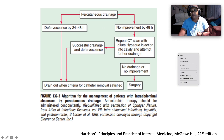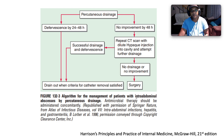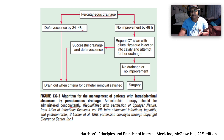This algorithm from Harrison's shows how to manage patients with intra-abdominal abscesses by percutaneous drainage. Antimicrobial therapy should be administered concomitantly. You drain the liver abscess percutaneously and should see defervescence by 24–48 hours. If there is no improvement by 48 hours, repeat the CT scan with dilute contrast injection into the cavity and attempt further drainage. If successful drainage and defervescence are achieved, drain when catheter removal criteria are satisfied. If there is no drainage or no clinical improvement, progress to surgery.